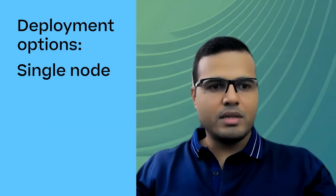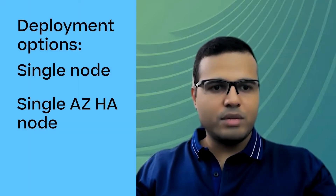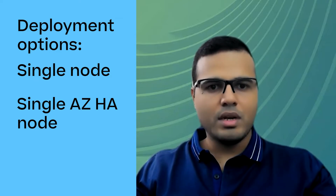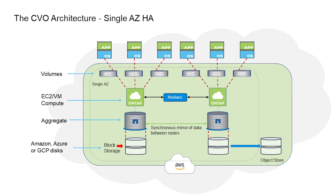The second type is HA deployment in a single availability zone. This protects against failures within a single availability zone. The HA nodes are in a placement group spread across distinct underlying hardware. The HA node serves data if the partner goes offline, and it does not require floating IP addresses as the configuration is in a single AZ.